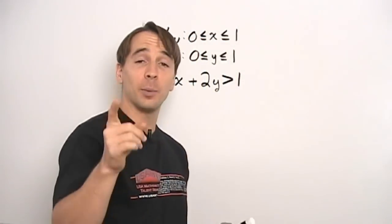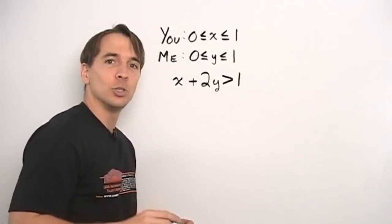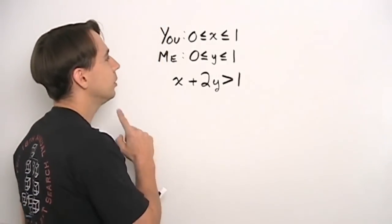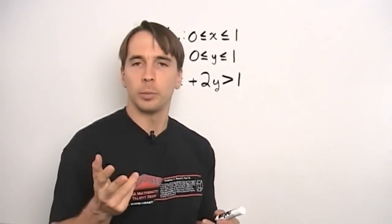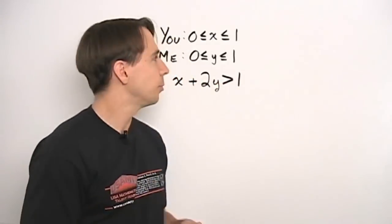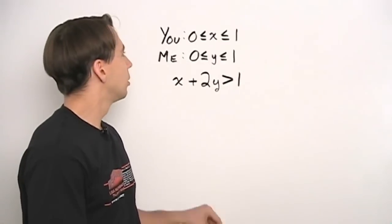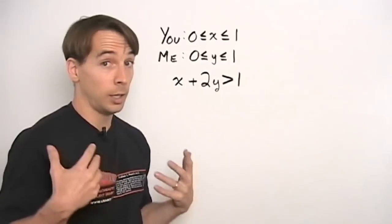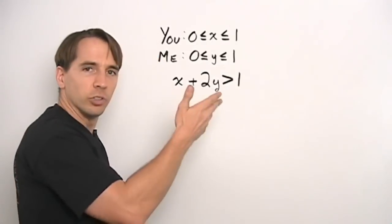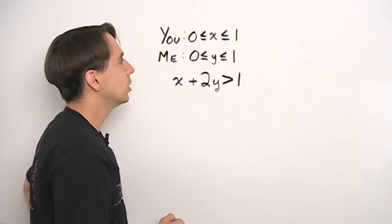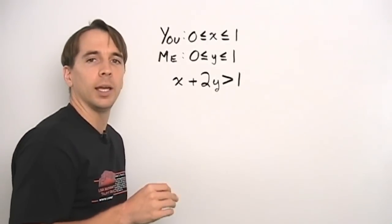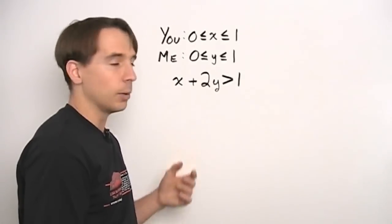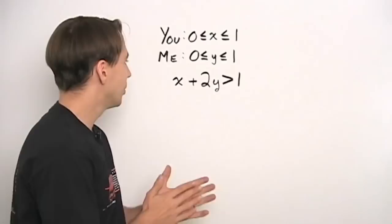We've got to do a math problem here. We've got to find the probability that if we each chose randomly, you would win. The usual way of doing probability is number of successes divided by number of possible. But we have a problem — the number of possible is infinite, because you have infinitely many choices from 0 to 1, and so do I. So that usual approach isn't going to work.